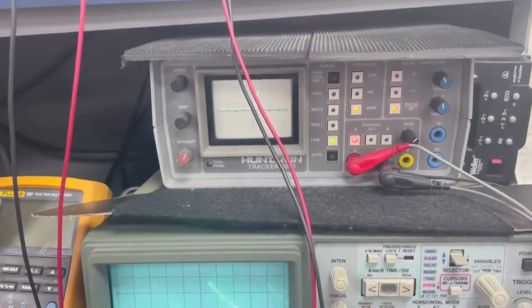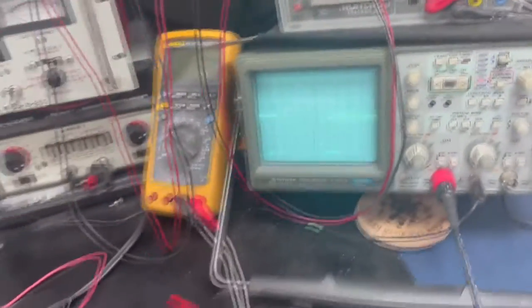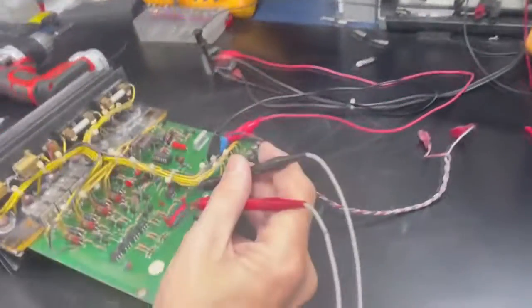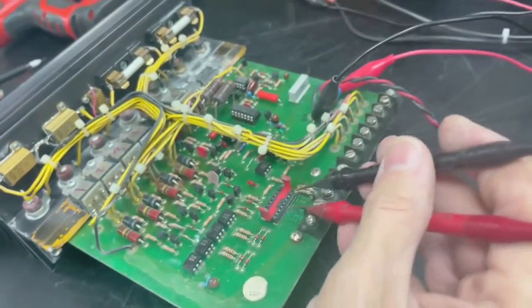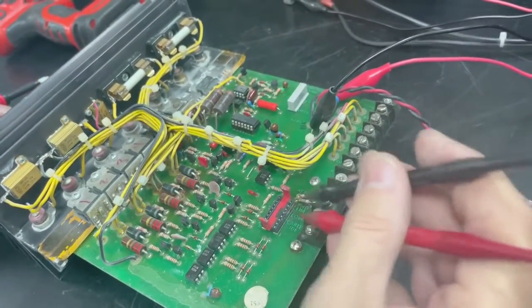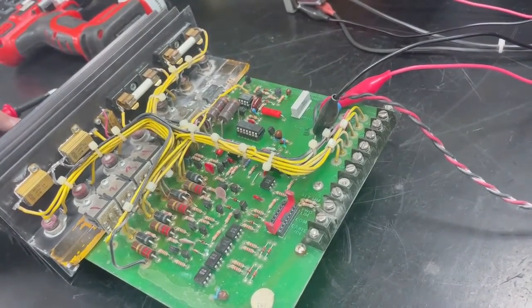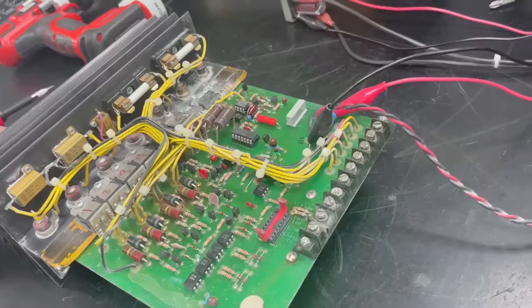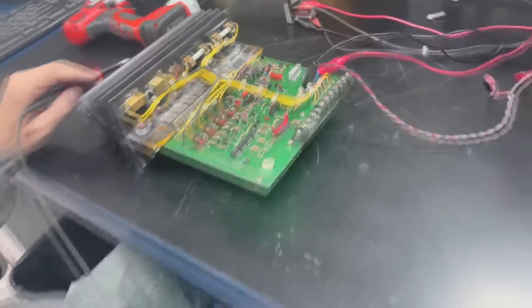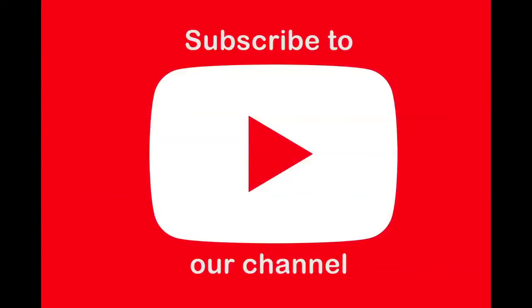Now that we have confirmed that the servo amplifier is functioning, we know that the problem lies in the control signal coming from the encoder. We'll let the customer know that the encoder needs to come in for repair, so we can get them back up and running. For more videos, subscribe to our channel.